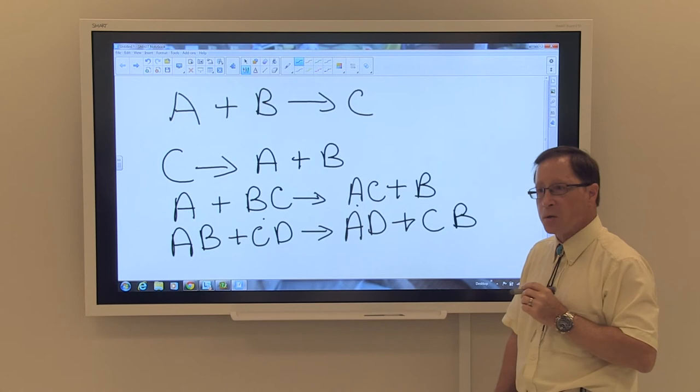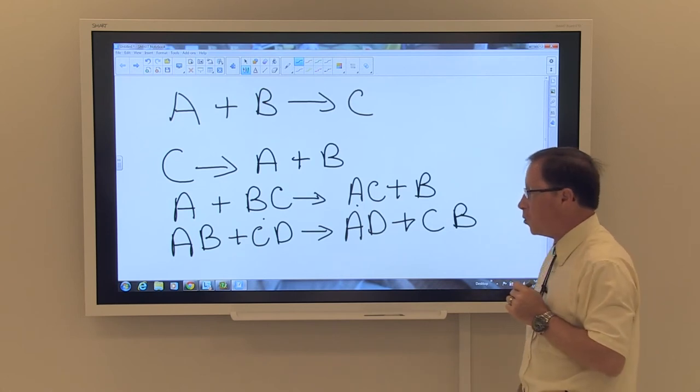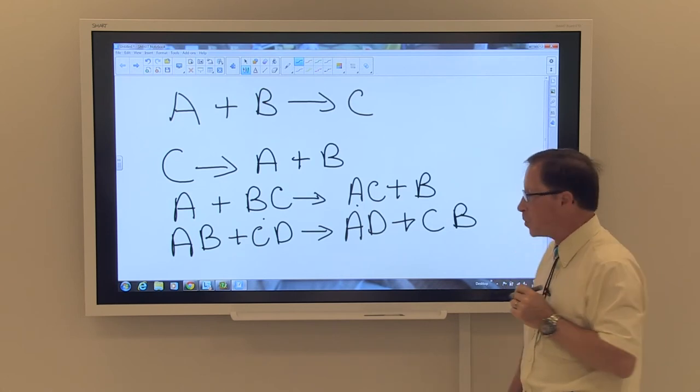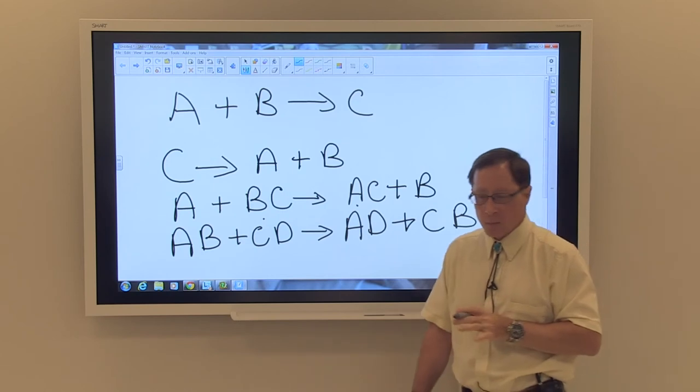You see that the cations exchange places and are bonded to a new anion. So these are your basic types of reactions.